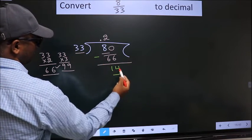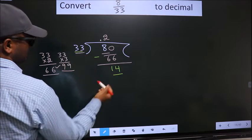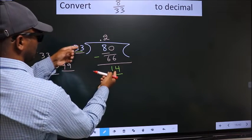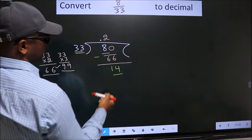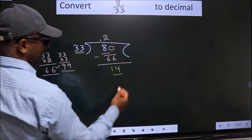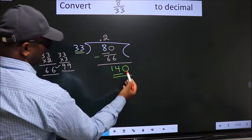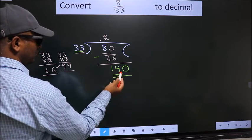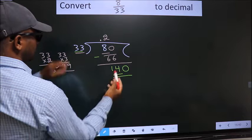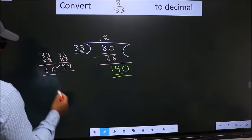Here we have 14, here 33. 14 is smaller than 33. We already have the decimal, so this time we can directly take 0. So, 140. A number close to 140 in the 33 table is - let us check with 5.